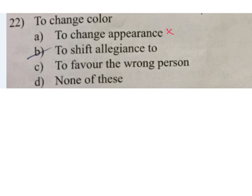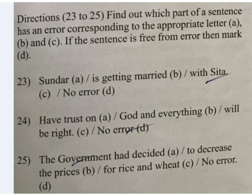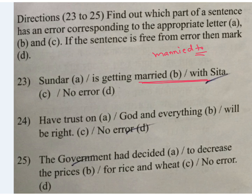More spotting errors — newly introduced. 'Sundar is getting married with Sita.' We know it should be 'married to,' so the error is in part C. 'Have trust on God and everything will be right' — it should be 'trust in God,' so A is the answer. 'The government had decided to decrease the prices for rice and wheat' — it should be 'prices of rice and wheat,' not 'prices for.' If anyone is getting a different answer, please comment.